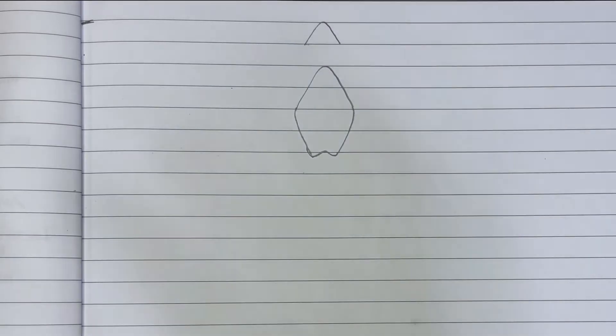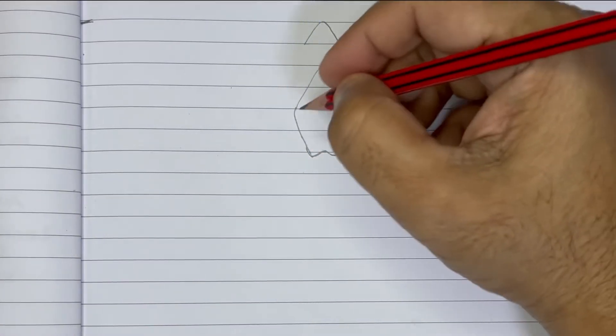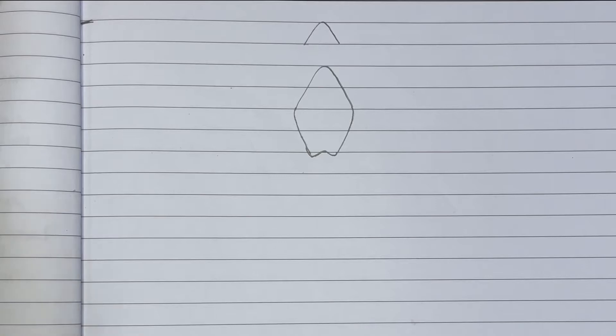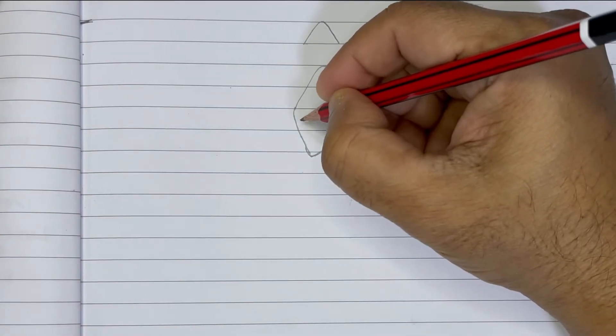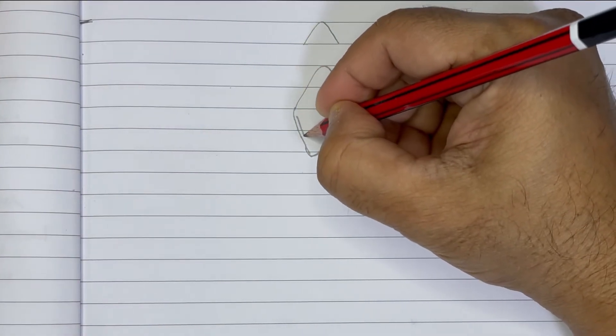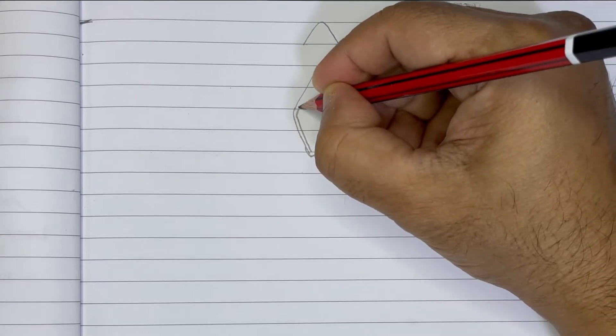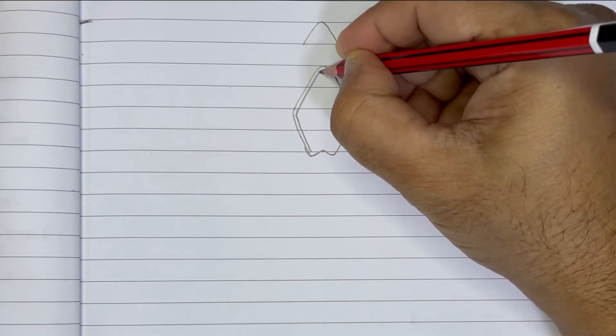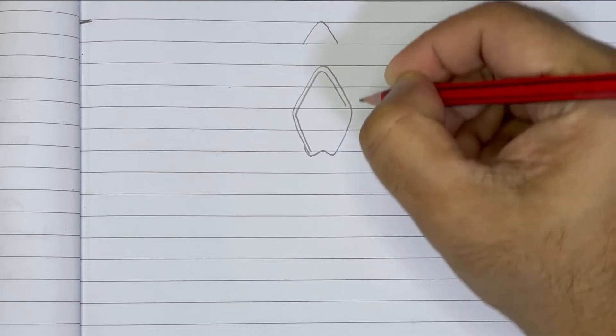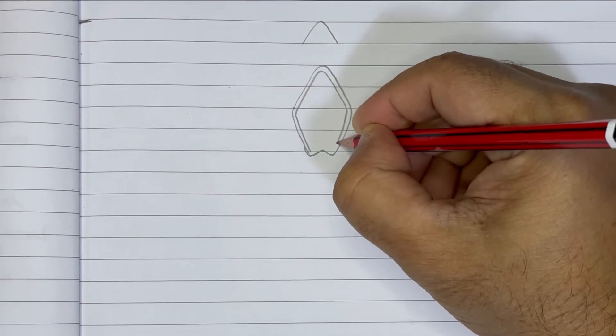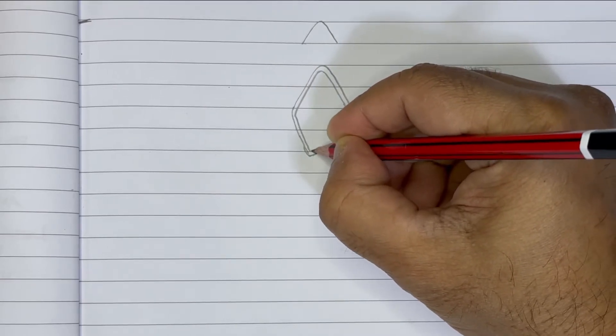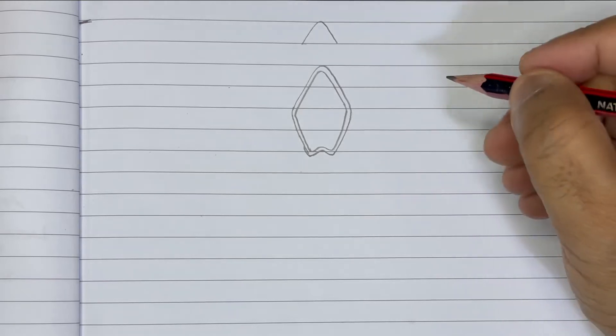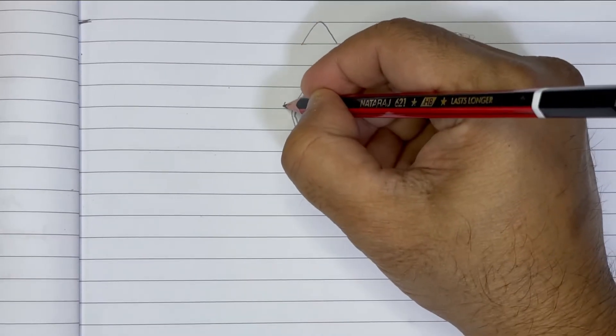Now next, we're going to make this into two lines. So we have to draw like this all the way to make it double lines. After that here, just make a small part.